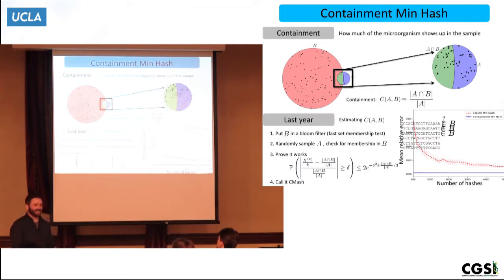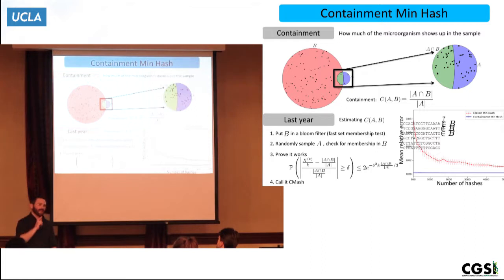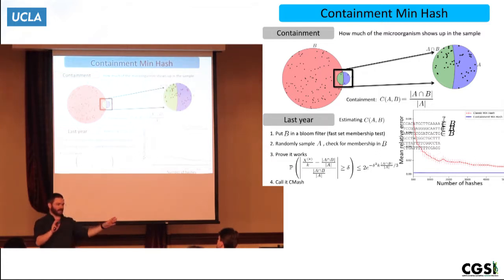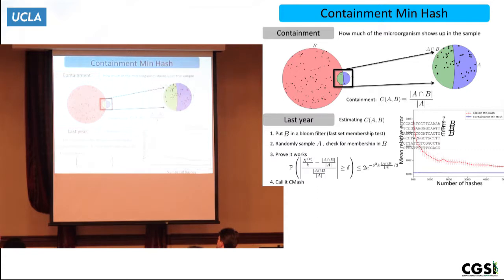Why not just align every read to the reference? The main reason is that my metagenome contains so many reads, and there are so many different reference organisms. The computational complexity is roughly N-squared — it just takes way too long. Another thing about this approach: even if your reference database is incomplete, it can still give you some ideas, whereas alignment might miss out completely depending on your alignment parameters.